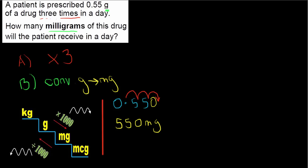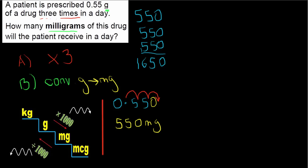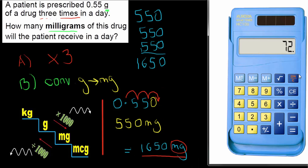Now let's do the times by 3. I'll write down 550 three times: zero plus zero plus zero is 0; five plus five plus five is 15, put down 5 carry 1; again three fives is 15 plus 1 is 16. My final answer is 1650 milligrams. It's very important in the examination to always write units in the answer box — if you forget, you will lose the mark.